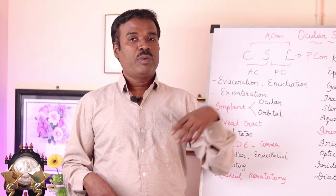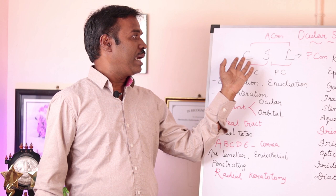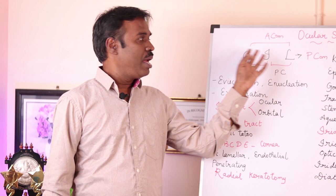Moving on to goniotomy. Before that, we need to know about the anterior chamber, which lies between the cornea and iris, and the posterior chamber between the iris and lens. Together, from cornea to iris, we have the anterior compartment.